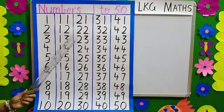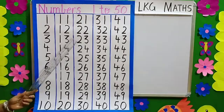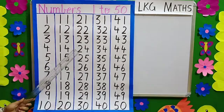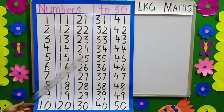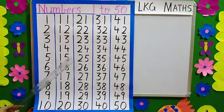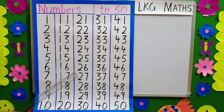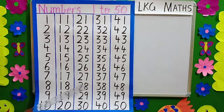2, 3 — 23. 2, 4 — 24. 2, 5 — 25. 2, 6 — 26. 2, 7 — 27. 2, 8 — 28. 2, 9 — 29.